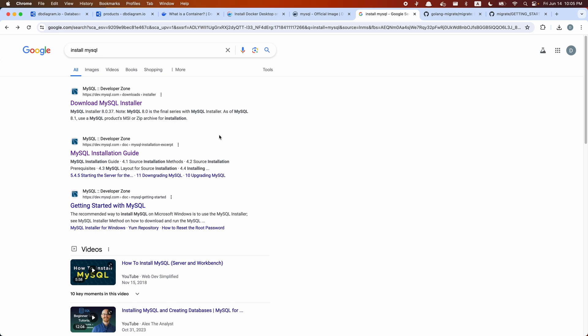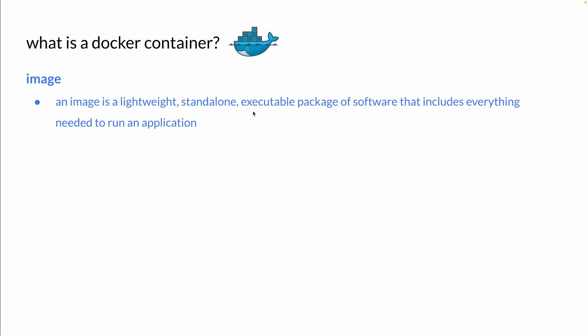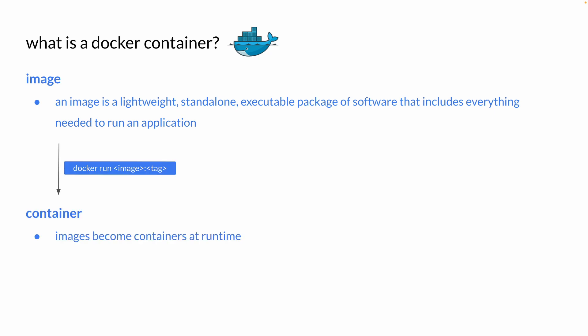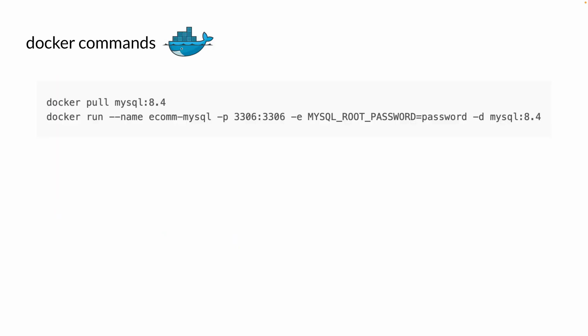However, that would mean you'd have to manually install all its dependencies, and it might also take up more space than necessary. So instead, we want to run MySQL as a container. For those of you not familiar with Docker images and containers, I'm going to go over these concepts quickly. An image is a lightweight executable package — think of it as a blueprint or template. When we execute the Docker run command on that image, that image becomes a container.